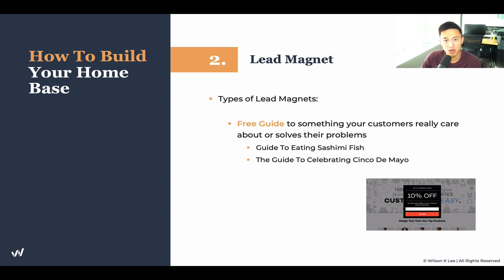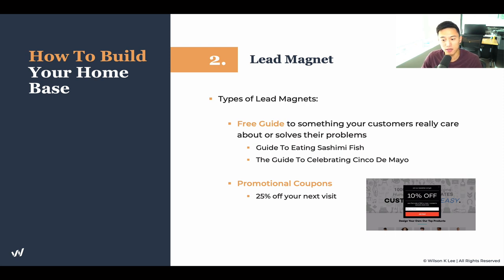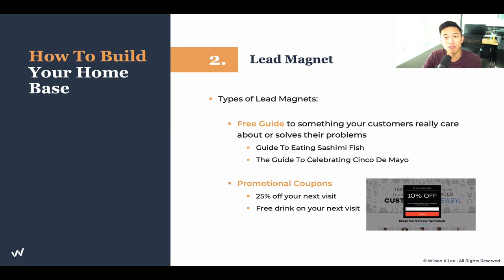Another example would be a guide to celebrating Cinco de Mayo. If you have a Mexican restaurant and you cater to people wanting to be immersed in that culture, people will be all over a guide like that. Another type of lead magnet would be promotional coupons — 25% off your next visit, a free drink on your next visit — stuff like that to bribe your customers in exchange for their email. We see these pop-ups all the time: 10% off, and so on. These are all lead magnets used across multiple different trades, and you should definitely use them in your restaurant.